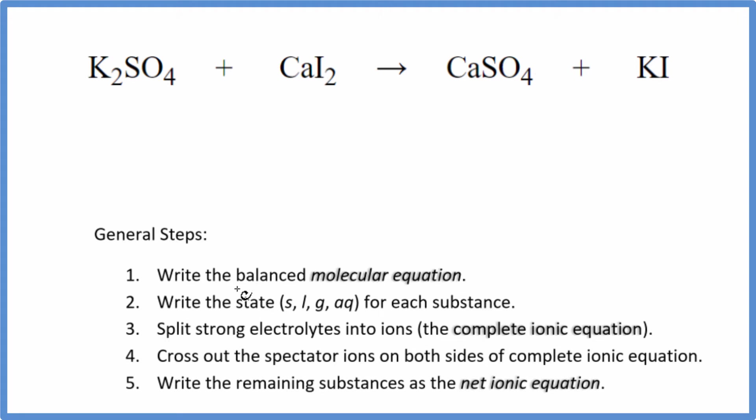First thing we need to do is balance the molecular equation. I have two potassium atoms here and just one here. I'm going to put a two here, two iodines. Now I have two iodines. That's good. I've got a sulfate here and a sulfate here and one calcium atom on each side. So this is the balanced molecular equation.